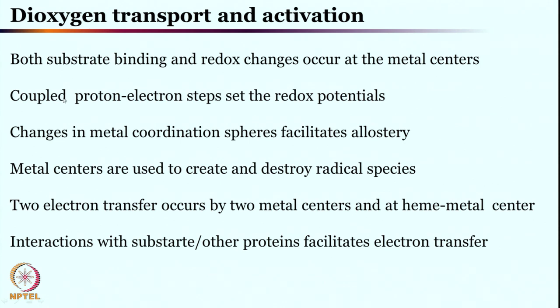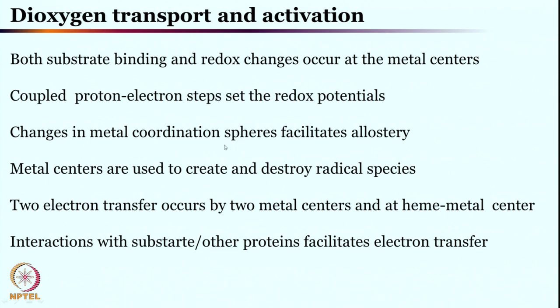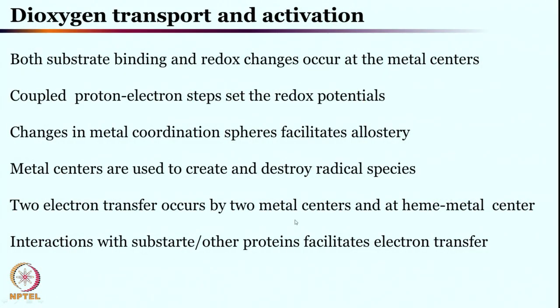Often we see that proton transfer and electron transfers are coupled with each other, and they are responsible for the redox potential. The metal coordination sphere facilitates a number of processes including allostery. Metal centers are used to create and destroy radical processes — metal can initiate a radical process and also terminate it. Two-electron transfer occurs at two metal centers; if two electrons are required, it is usually two metal centers involved. One-electron transfer processes still predominate in biological systems, especially at heme centers.